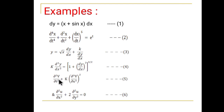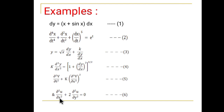In equations 5 and 6, we observe that v is a dependent variable and for v there are two independent variables t and x. In equation 6, u is a dependent variable and for u there are two independent variables x and y.